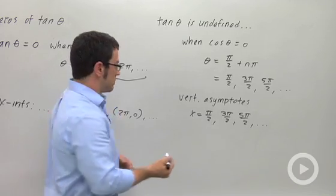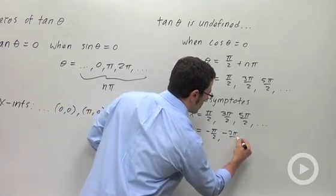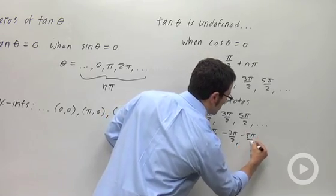And of course it goes in the negative direction too. x equals negative pi over 2, negative 3 pi over 2, negative 5 pi over 2, and so on.